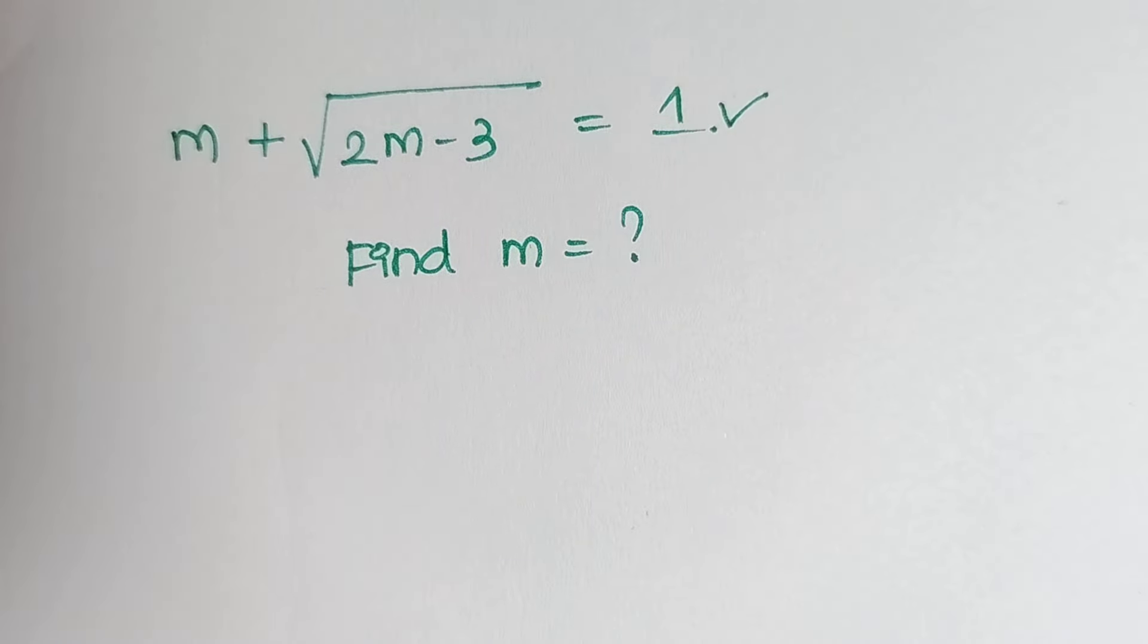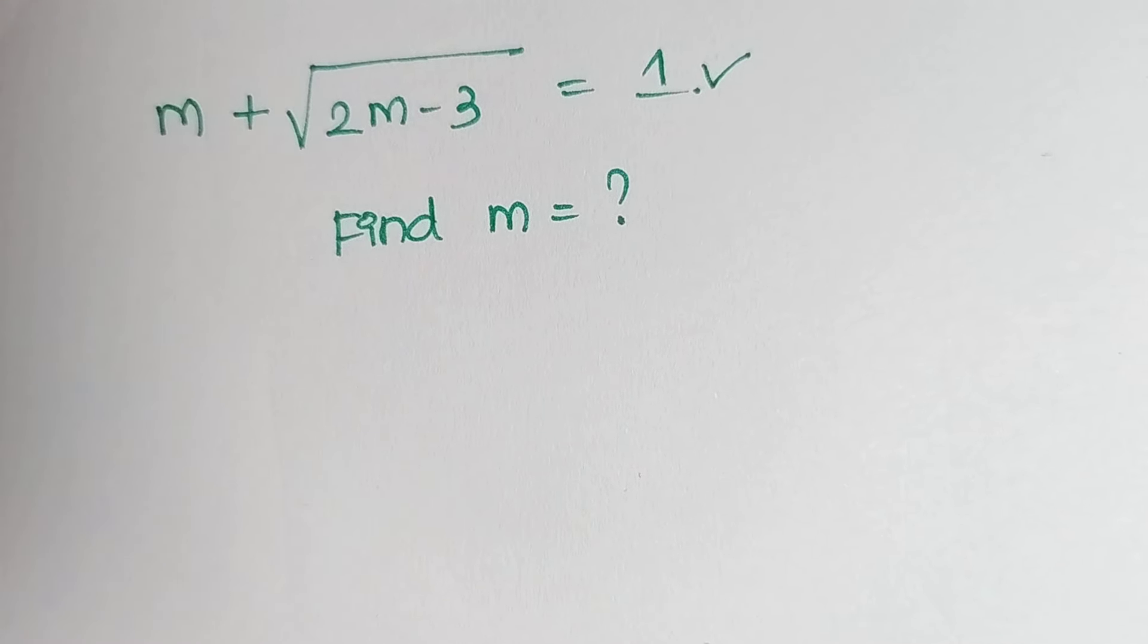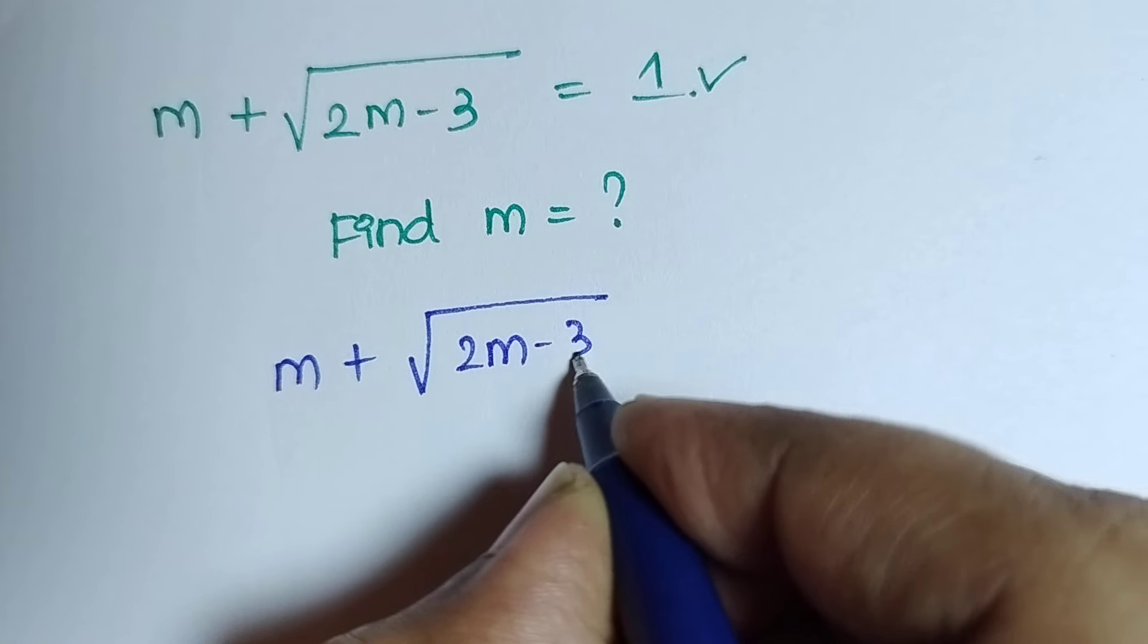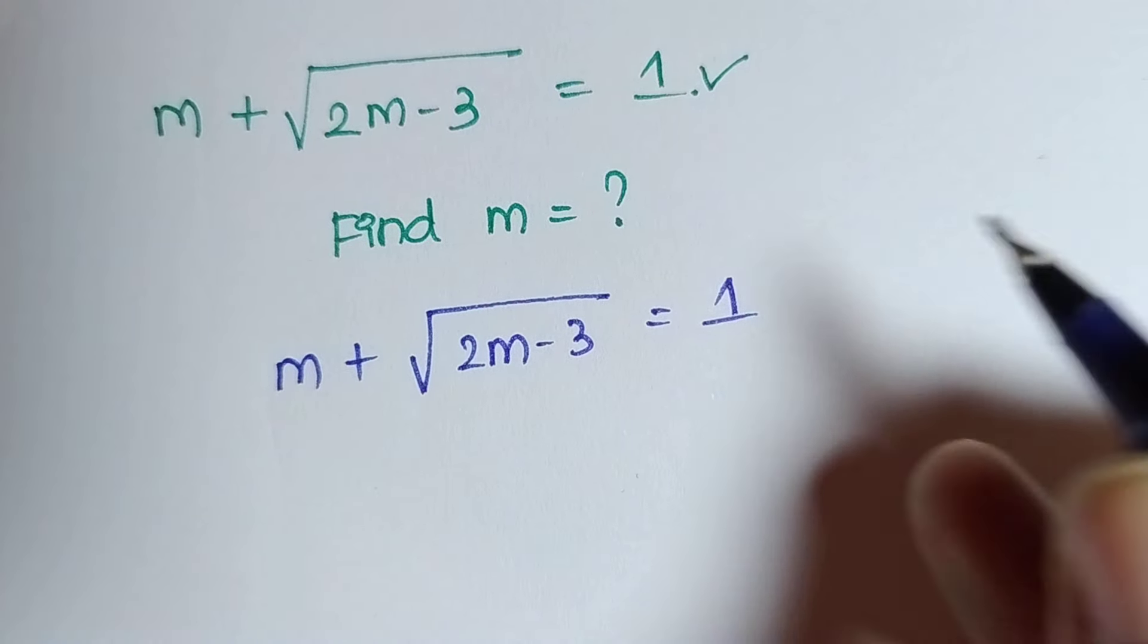I am going to take this equation and solve it. m plus root of 2m minus 3 is equal to 1. This is the actual equation.